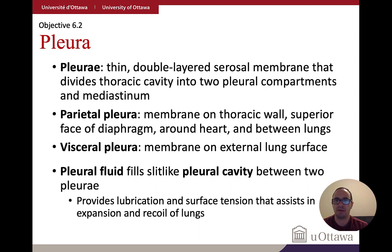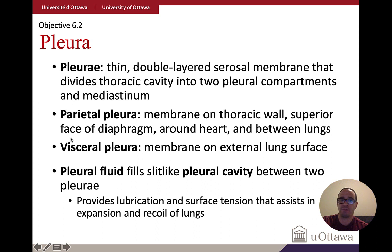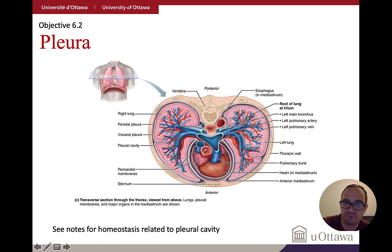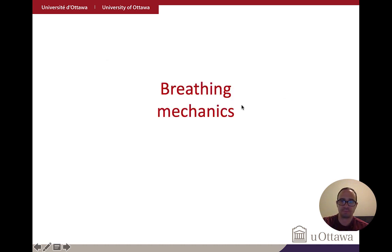The pleura is a thin membrane sac surrounding the lungs, similar to the membrane around the heart. The parietal pleura lines the thoracic wall — the outermost layer — and the visceral pleura covers the lung surface. Fluid between these two layers provides lubrication and aids in expansion and recoil of the lungs. This double membrane sac is critical to the process of breathing.